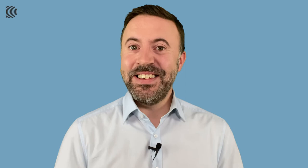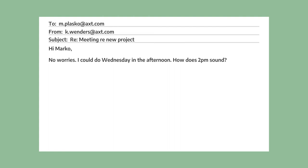And now let's take a look at Kim's response. Kim starts with "Hi Marco," then writes "No worries — I could do Wednesday in the afternoon. How does 2pm sound?" So "no worries" means no problem, it doesn't matter that you don't have time. Then she responds to his suggestion: "I could do Wednesday" — she's saying it's possible for her — and suggests a time. Then she writes, "Looking forward to it. Cheers, Kim" — a common way to end an informal mail. "Cheers" can mean thank you, and it can also mean bye.